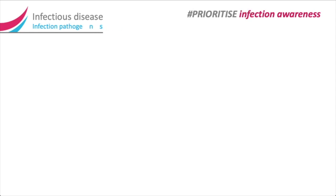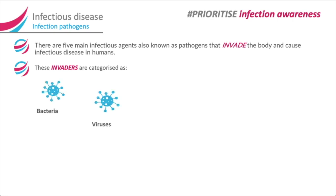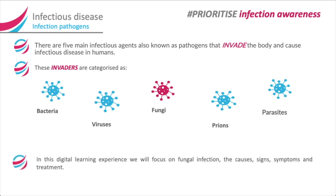Infectious disease infection pathogens. There are five main infectious agents, also known as pathogens, that invade the body and cause infectious disease in humans. These invaders are categorized as bacteria, viruses, fungi, prions, and parasites. In this digital learning experience we will focus on fungal infection — the causes, signs, symptoms, and treatment.